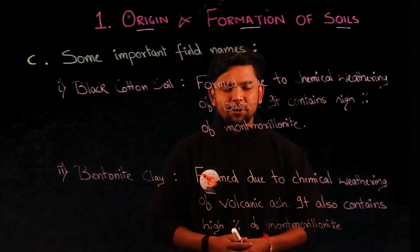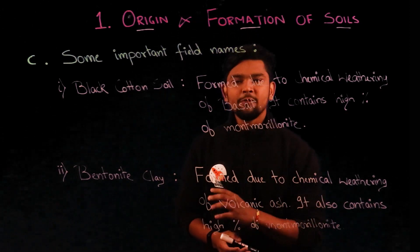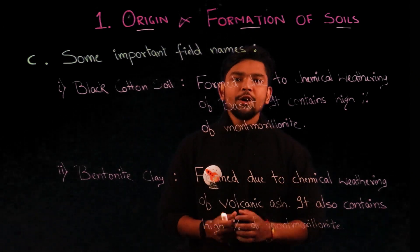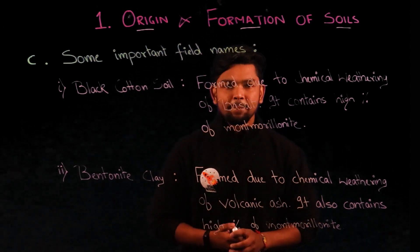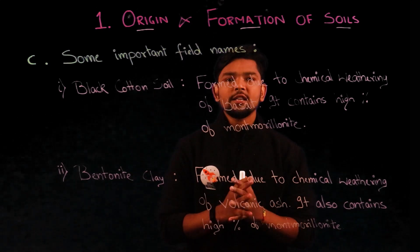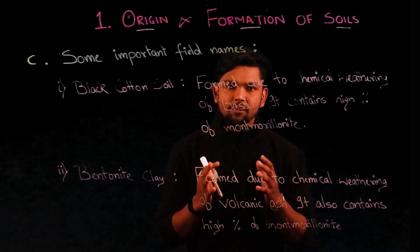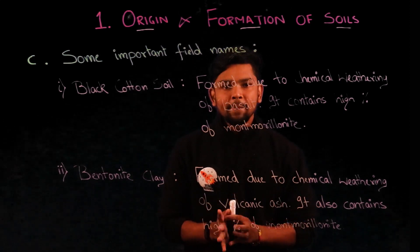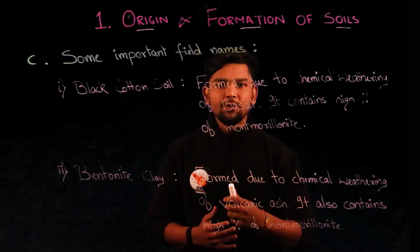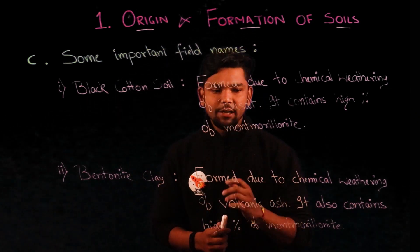In the last part of this chapter, we discuss important field names a geotechnical engineer must know. Black cotton soil is a type of residual soil formed due to chemical weathering of basalt. It contains a high percentage of the clay mineral montmorillonite, due to which it exhibits high swelling and shrinkage. It is found in central and southern India, and pile foundation is generally used for construction in this type of soil. Next is bentonite clay — also a residual soil formed due to chemical weathering of volcanic ash.